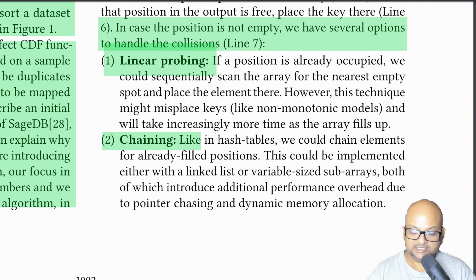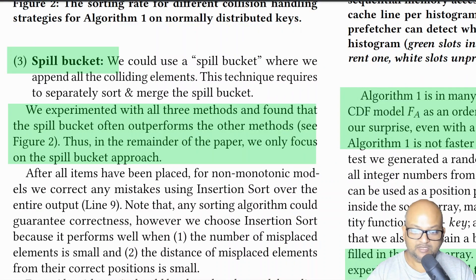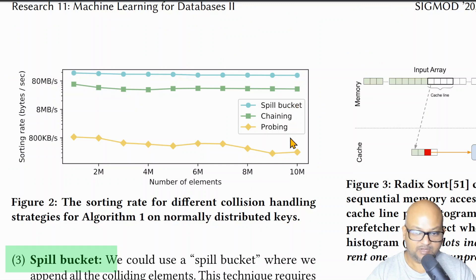So what do we do about collisions? This is very similar to the issues we have with hash tables, and there are several well-known techniques to deal with it. One is linear probing, where you just look for the next empty position and put the collision over there. Another one is chaining, where for every filled position you maintain a list of other elements that also would go to that position. Or we could have a spill bucket, which simply appends all the colliding elements into a separate list outside this main array. But then this requires that once you're done at the end, you sort and merge the elements that went into the spill bucket. And it is this spill bucket option that the authors went with because empirically they saw that it had the best performance.